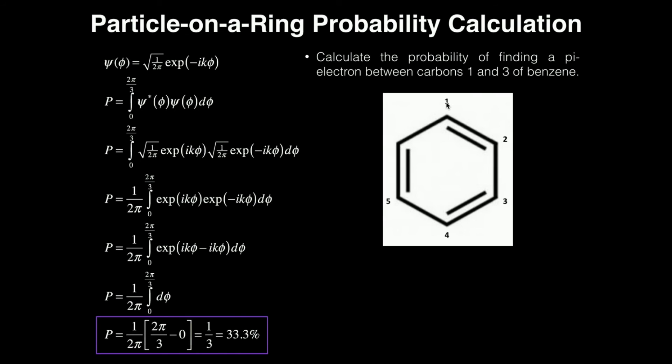If I asked you what's the probability of finding it between one and four, that's one-half, because going around from one to four is half of the length. What's the probability of finding between one and five? Two-thirds, right? Probability between one and two, one-sixth.